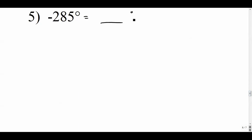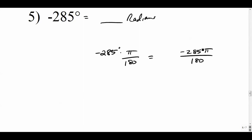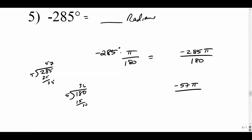Example five: converting -285 degrees to radians — the answer will be negative. Multiply by pi over 180, giving -285pi over 180. Divide both by 5: -57pi over 36. Then divide by 3: that gives -19pi over 12, and that's in radians. Simplify all the way if you haven't already.